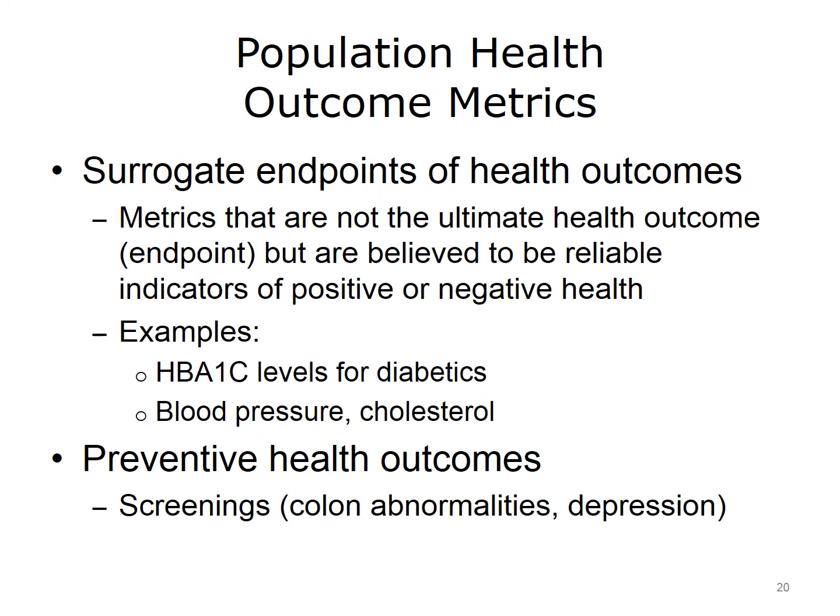A key issue with population health outcome metrics relates to surrogate endpoints. Surrogate endpoints are metrics that are not the ultimate health outcome, but are believed or shown through evidence to be reliable indicators of positive or negative health outcomes. Examples include the HbA1c level for diabetics, or blood pressure and cholesterol for other types of patients. These metrics are common to population health data analytics.